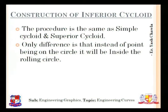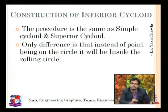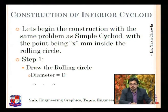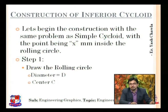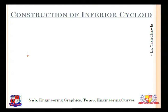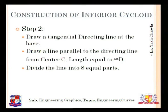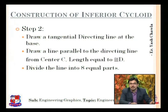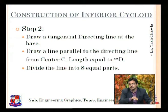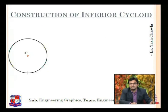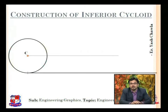The procedure is the same as for a simple cycloid and superior cycloid. The only difference will be that the point will be inside the circle rather than on the rolling circle or outside it. We begin by taking a point C with diameter D and drawing a circle. The next stage is drawing a tangential directing line passing through the base of the circle and a line parallel to the directing line passing through the center.